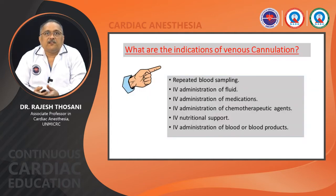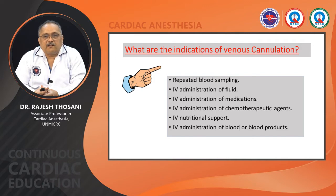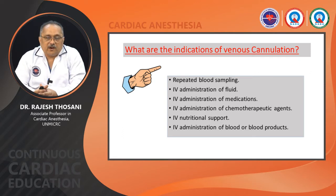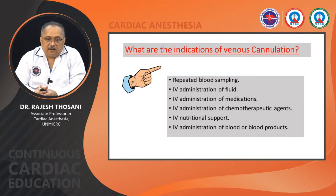Peripheral vein cannulation is essential for every patient admitted to hospital — neonates, children, and adults alike. Without cannulation it is very difficult to take blood samples, give fluids, medications, chemotherapy, nutritional support, or blood products. Proper size of vein and cannula, along with proper assessment, is important to maintain the cannulation site long-term without infection.